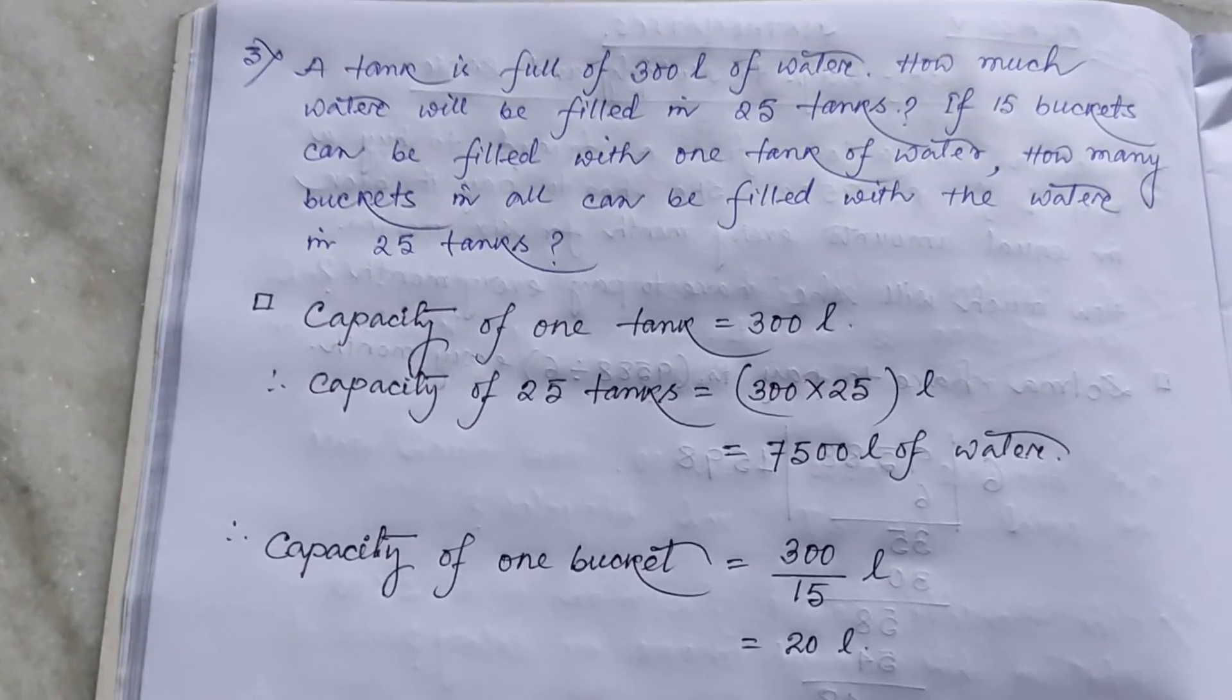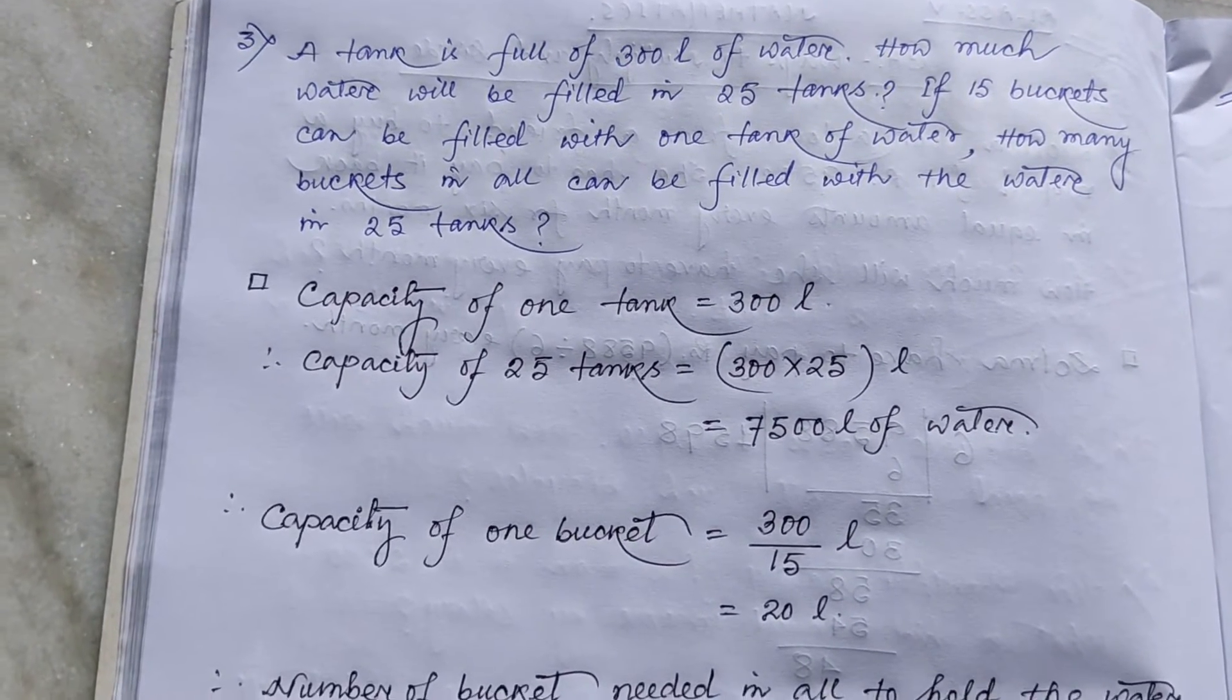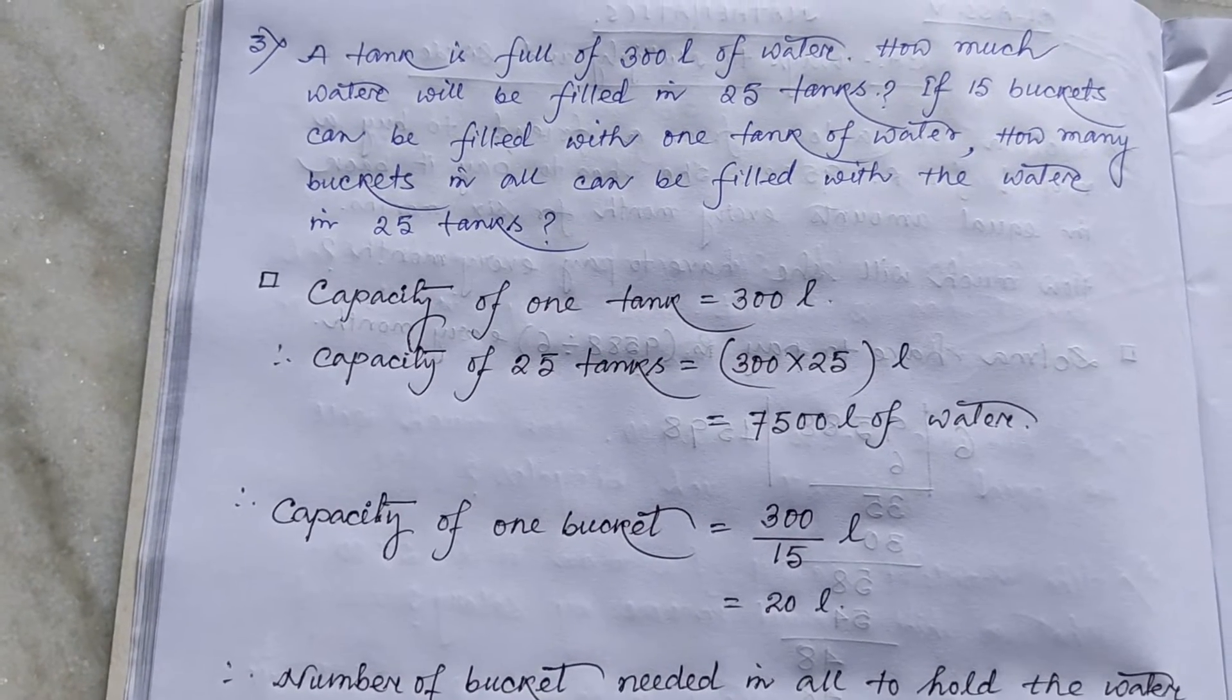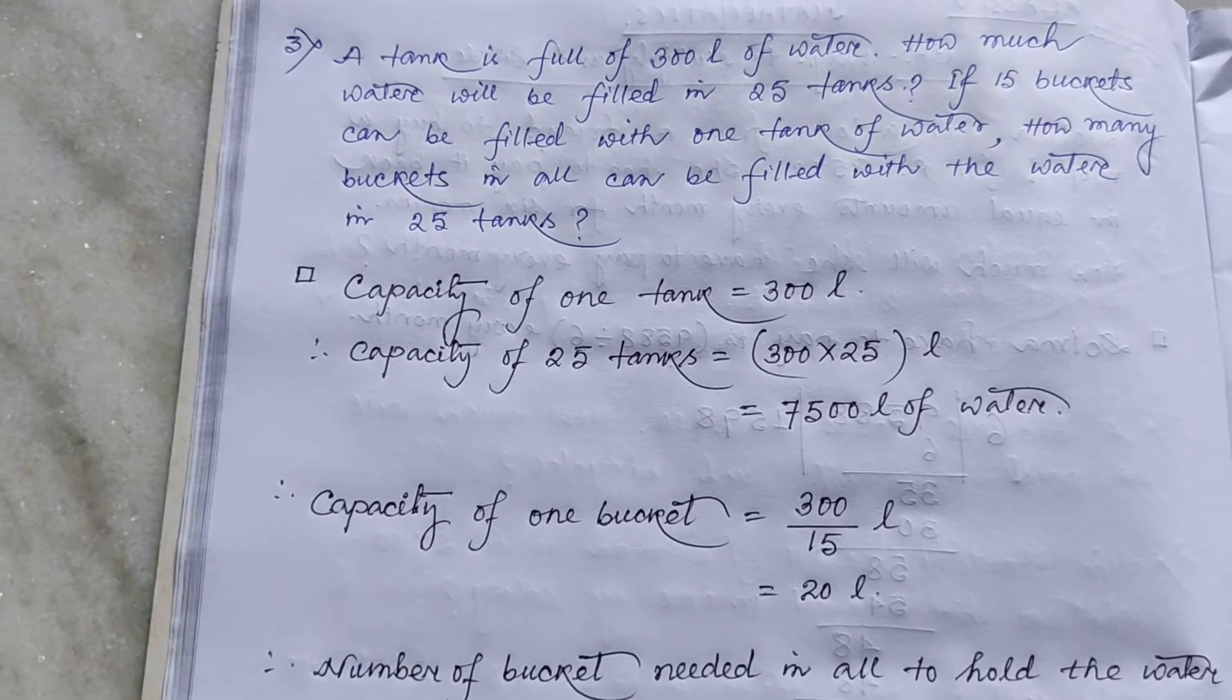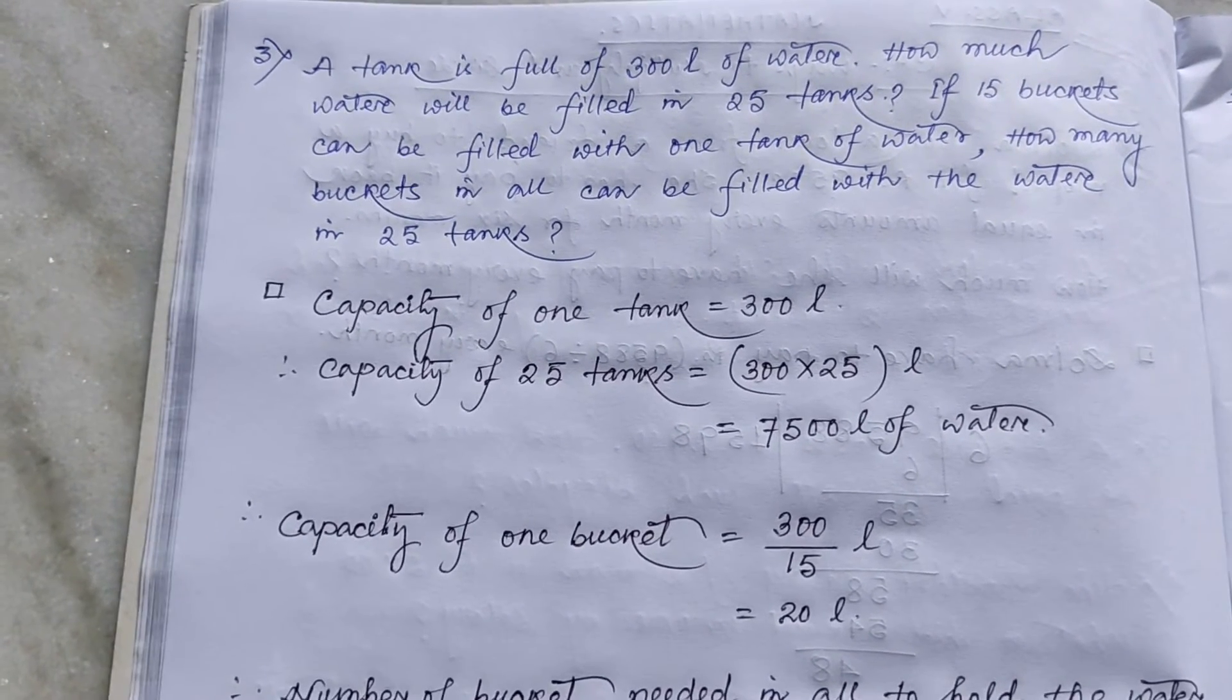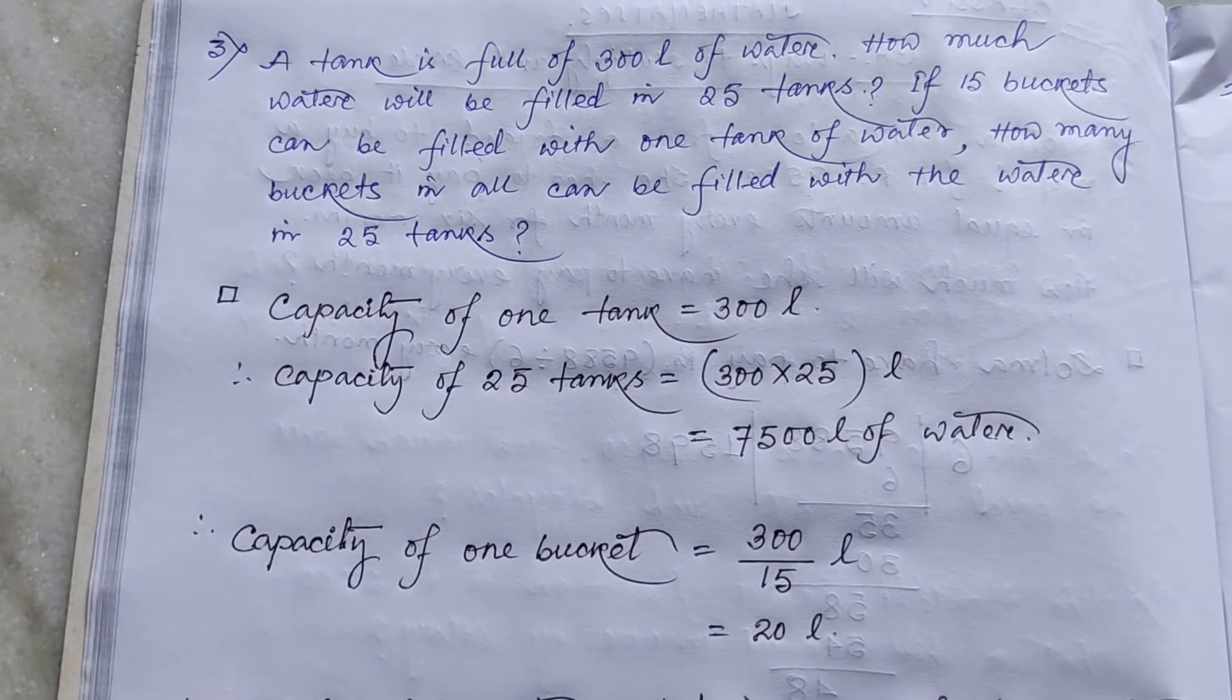This problem is an example of multiplication and division combined. So problem is number 1. A tank is full of 300 liter of water.